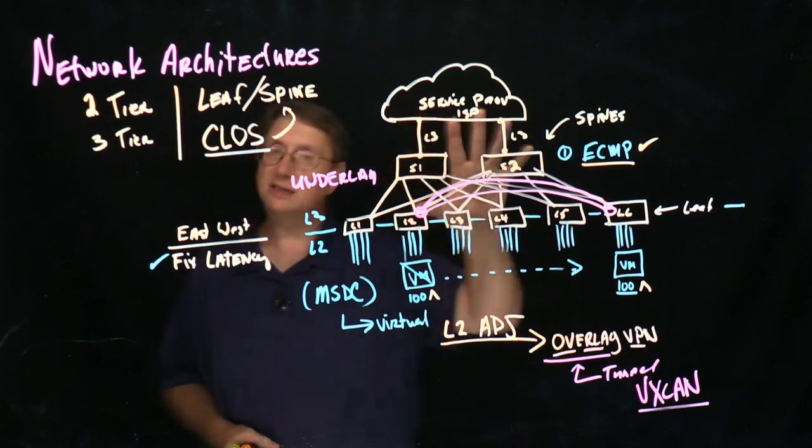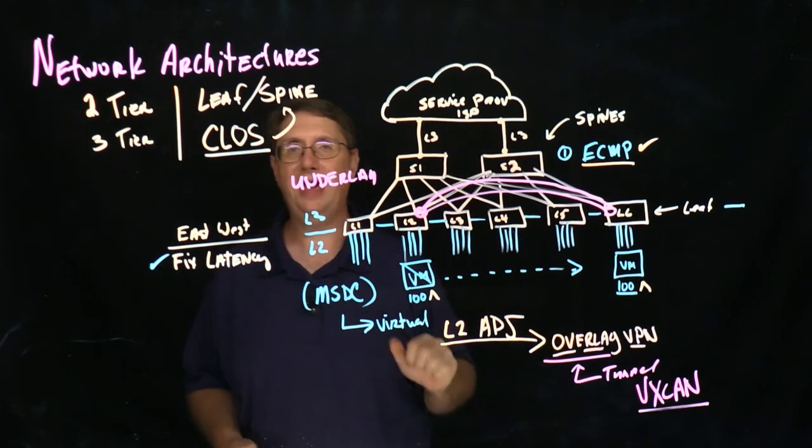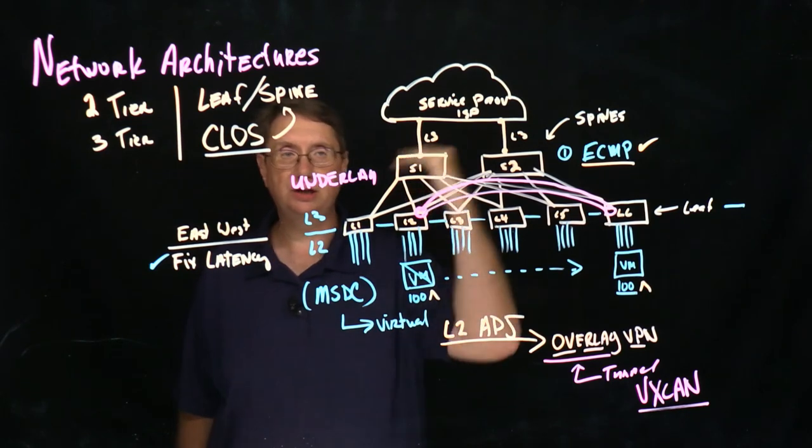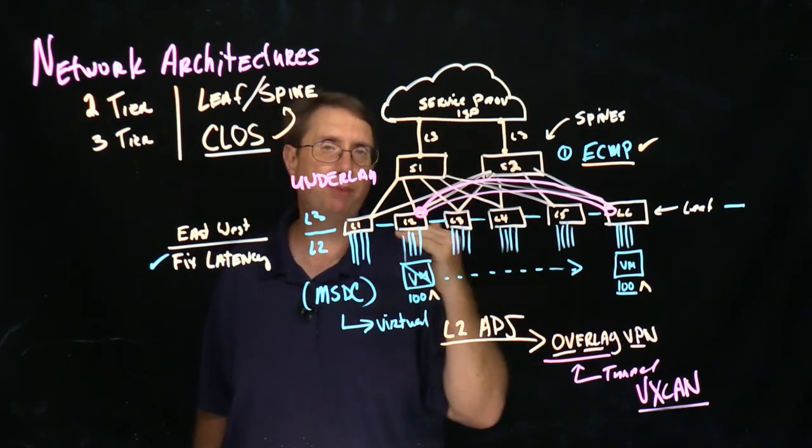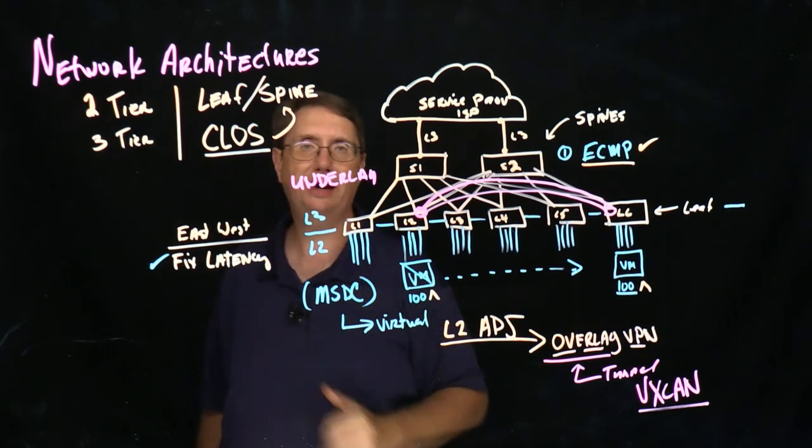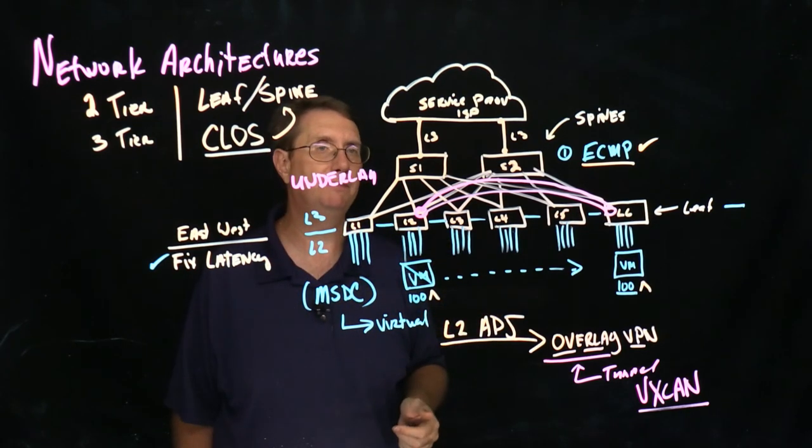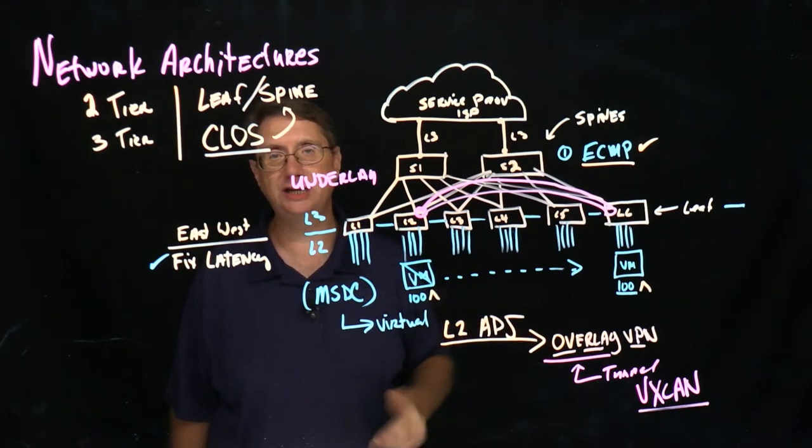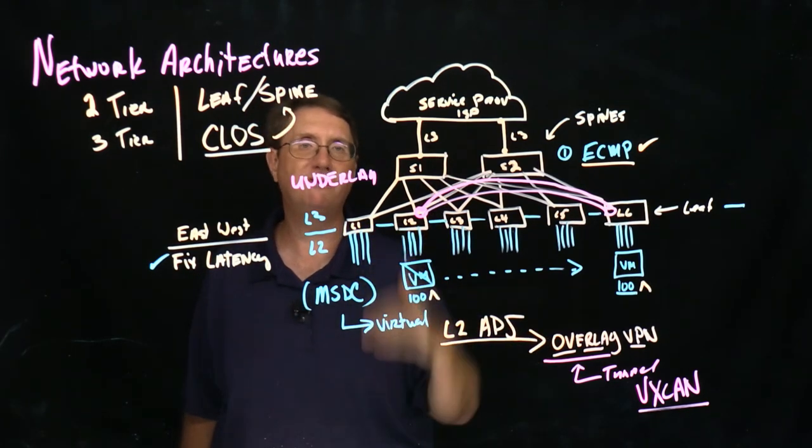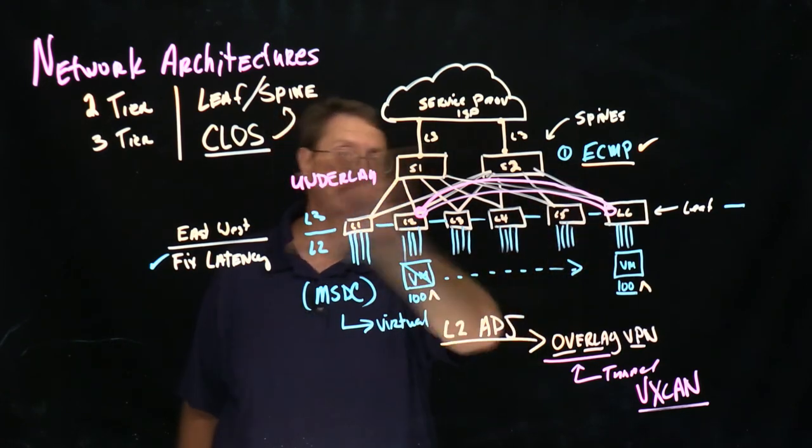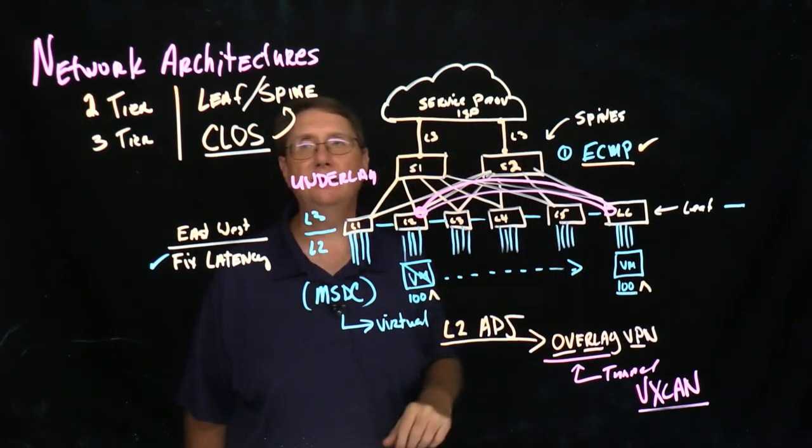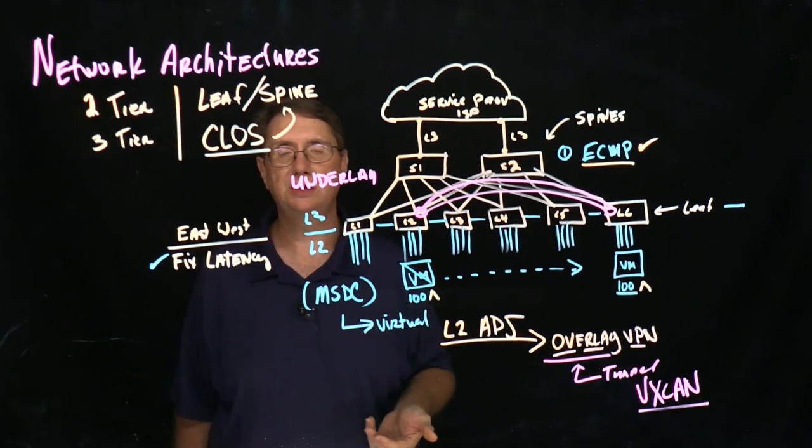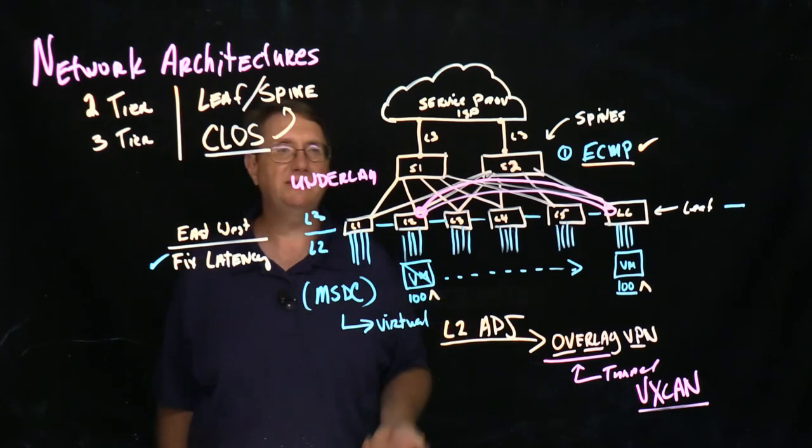But don't get this design confused with a two-tier design. The two-tier design collapses the aggregation and the core layer into a single layer, but we still have the point of demarcation between layer two and layer three in that collapsed area. Inside of a CLOS design, the layer three layer two point of demarcation exists at the lowest point of my total fabric. So all of these switches acting together in this CLOS design, in this leaf spine design, provide those services.